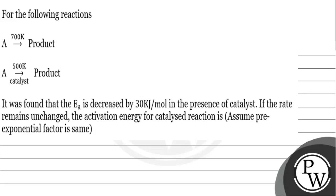Let's read this question. For the following reactions, we have A at 700 Kelvin giving a product. When we have a catalyst, we also get a product. It was found that activation energy is decreased by 30 kilojoule per mole in the presence of catalyst. If the rate remains unchanged, find the activation energy for the catalyzed reaction, assuming the pre-exponential factor is the same.